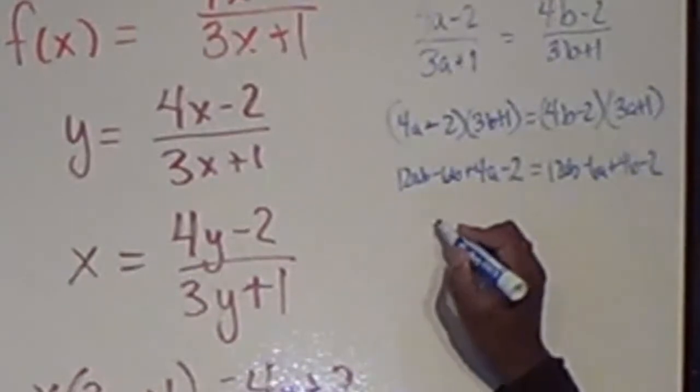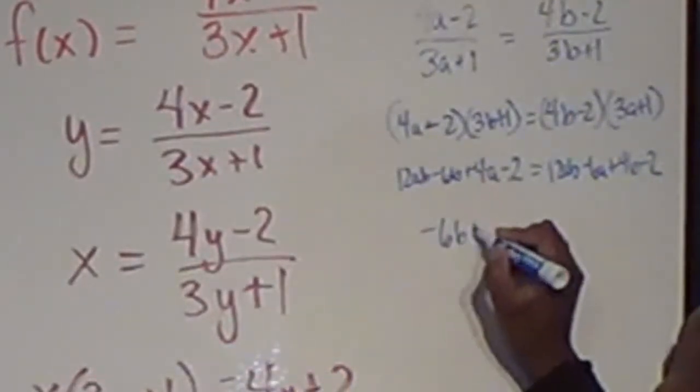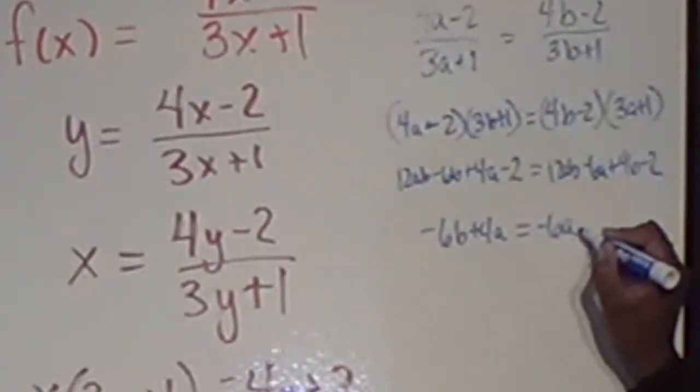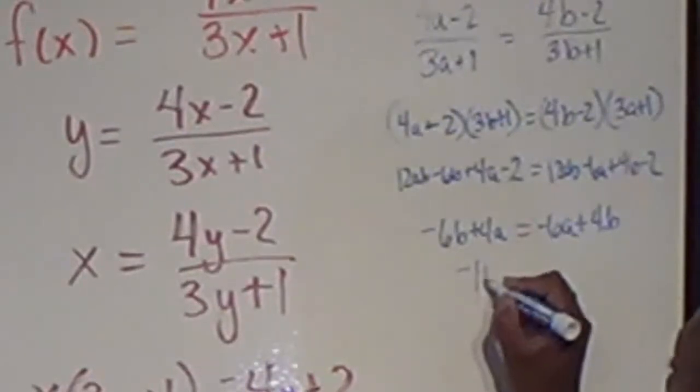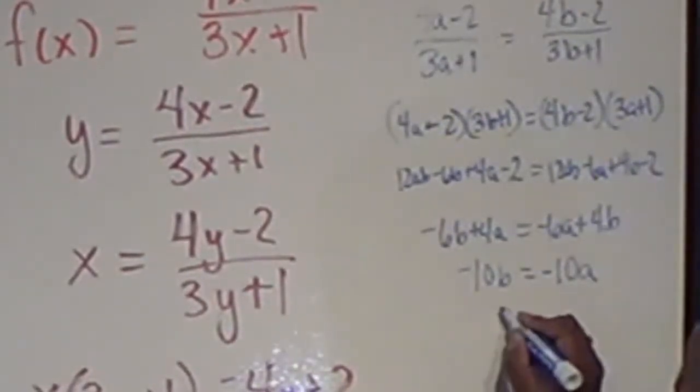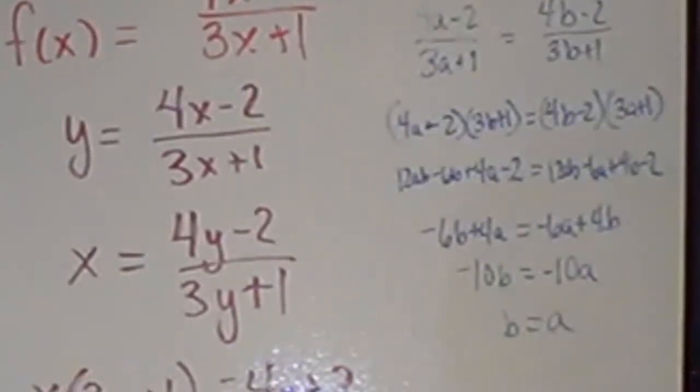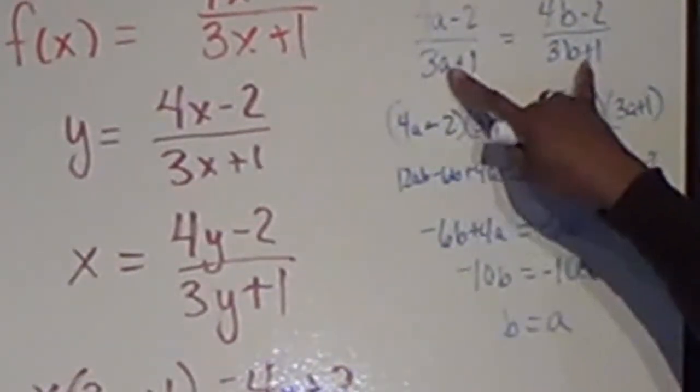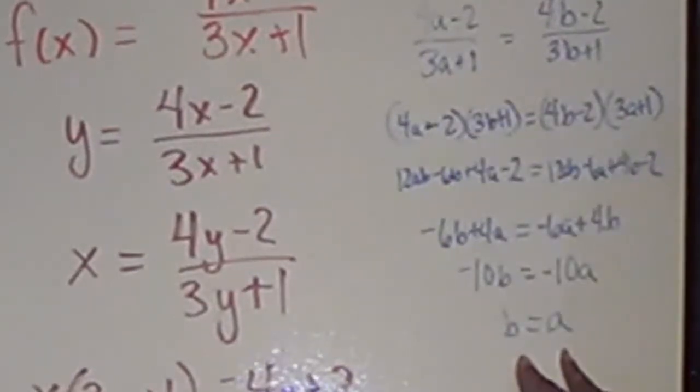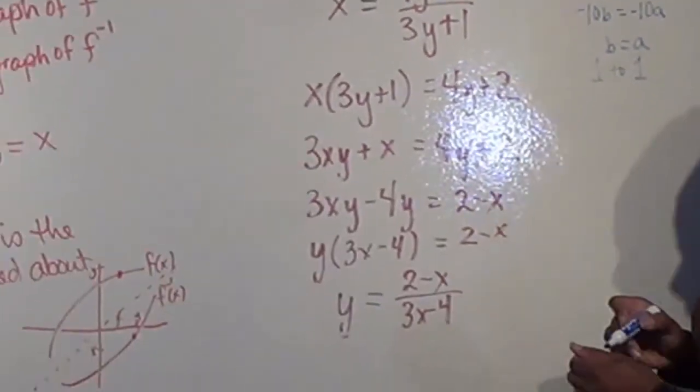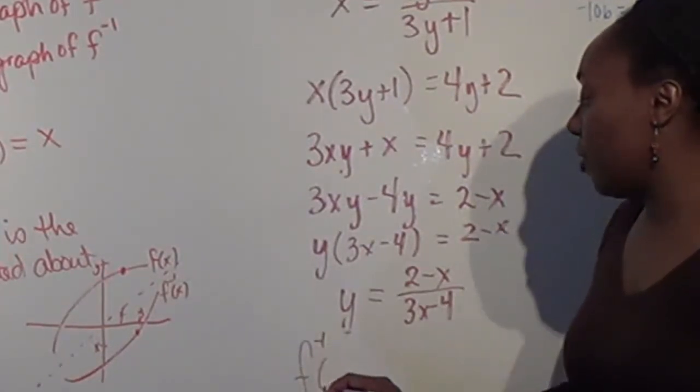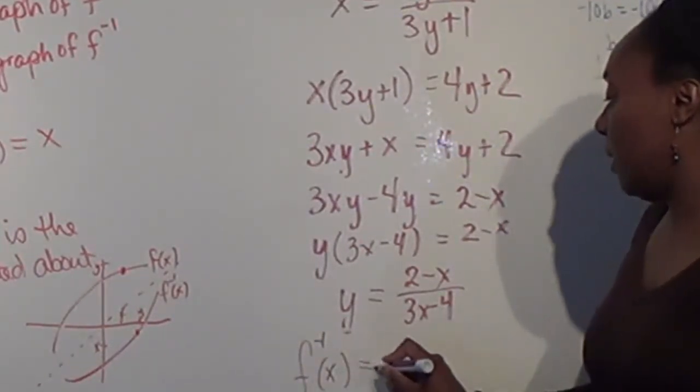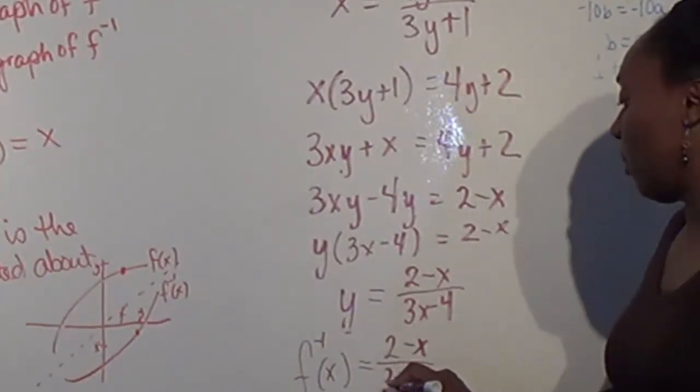12ab's and the 2's will cancel out, so I get negative 6b plus 4a equaling negative 6a plus 4b. Then I can combine like terms, so negative 10b equals negative 10a, which says that b equals a. In this case, I took two images that were equivalent, and it shows me that the domain variables have to be equivalent. So this is one-to-one, which means this function that I found, I can write as f inverse of x equaling 2 minus x over 3x minus 4.